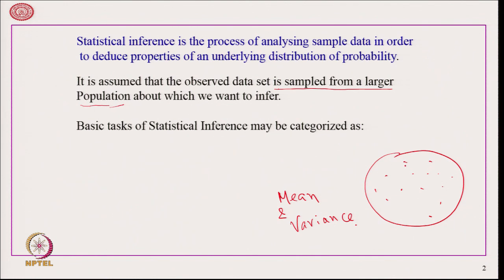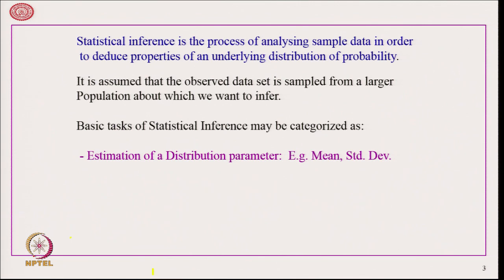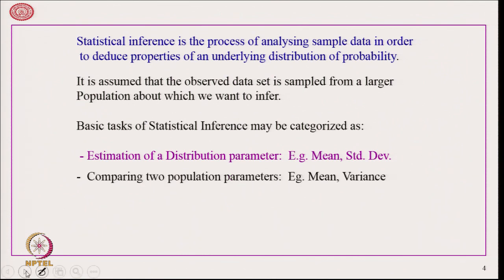So what is being done? Suppose there is a huge set of data — we take a small sample, typically randomly chosen — and based on that our aim is to infer about this population, or sometimes we compare two populations. Therefore, the basic tasks of statistical inference can be stated. One is estimation of distribution parameters. It can be comparing two population parameters, namely mean and variance. Say for example, here is a group of students and here is another group of students. We want to compare whether they have the same mean or the same variance, or if they are not the same, what is the relationship between them.